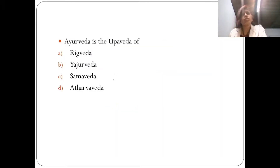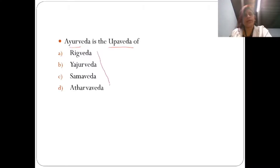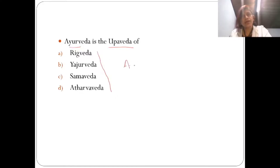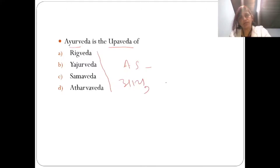Third question: Ayurveda is the Upaveda of which Veda? The four Vedas are Rig, Yajur, Sama, and Atharva. Ayurveda is considered the Upaveda of one among them. In the Ashtanga Sangraha definition of Ayurveda, it states: 'Ayushaha Palanam Vedaha Upavedham Atharvanaha' — so Ayurveda is the Upaveda of Atharvaveda. Reference: Ashtanga Sangraha of Vagbhata.